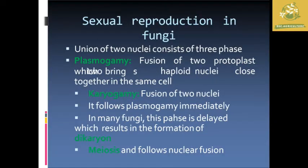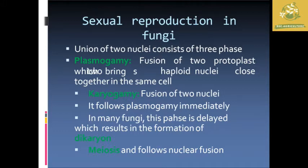While seeing about sexual reproduction in fungi, this is the general description. There is a union of two nuclei which consists of three phases. The first one is Plasmogamy — the fusion of two protoplasts which brings two haploid cells close together into the same cell. In Karyogamy, the fusion of two nuclei takes place and follows Plasmogamy immediately. In many fungi this phase is delayed, resulting in the formation of Dikaryons, followed by Meiosis which involves nuclear division.